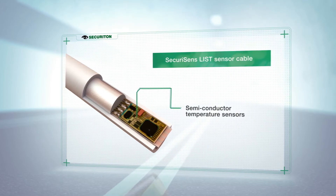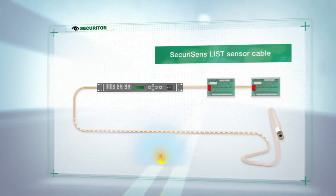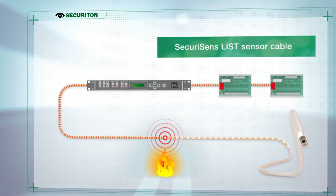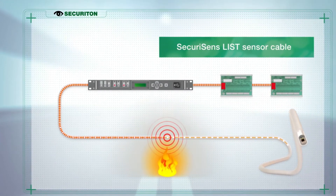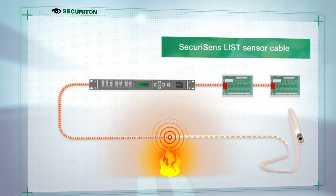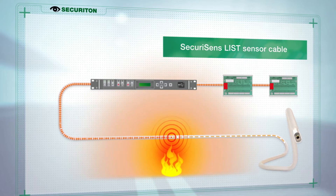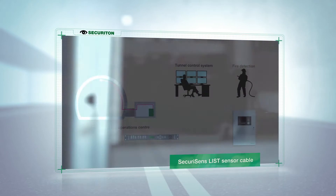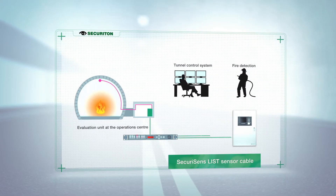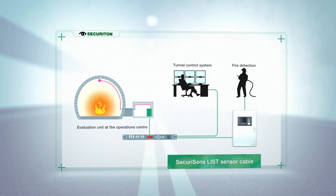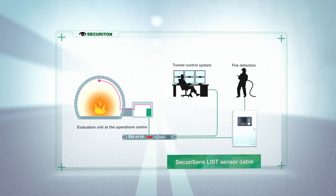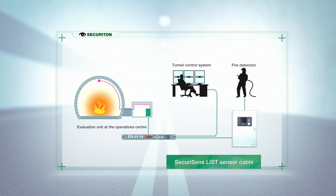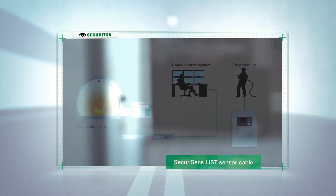The operating principle behind the Securisense List sensor cable is simple. Located inside the cable, semiconductor temperature sensors measure the ambient temperature and send this to the evaluation unit. Here, the temperatures are compared with the defined threshold values and an alarm is triggered if these values are exceeded. The evaluation unit is located in the operation center of the tunnel. From here, the alarm signals are passed on to the fire alarm control panel, and at the same time the temperature values are also forwarded to the tunnel control system. This allows for continuous temperature monitoring in the entire tunnel and the possibility of detecting temperature trends.